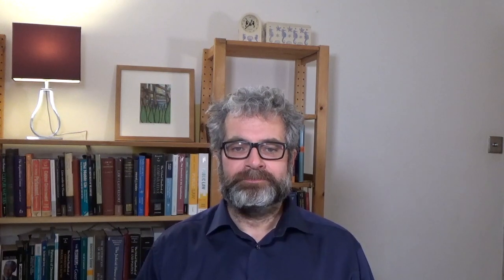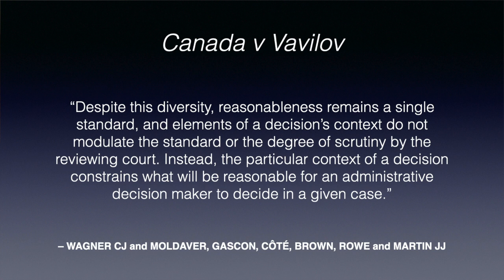This can also be seen in the context of Justice Binnie's remarks in Dunsmuir, about getting the parties away from arguing about the tests and back to arguing about the substantive merits of their case. At paragraph 88, the court acknowledges the variety of types of decision makers and types of decisions that comprise the administrative state. But as the majority put it at paragraph 89: despite this diversity, reasonableness remains a single standard and elements of a decision's context do not modulate the standard or the degree of scrutiny by the reviewing court. Instead, the particular context of a decision constrains what will be reasonable for an administrative decision maker to decide in a given case.